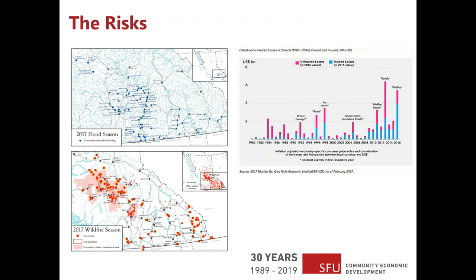Here in BC, just in the 2017 season between floods and wildfires, all of those dots on the map are communities that were impacted or areas that had some sort of fire. Clearly, there's a need in our province to be concerned about not only resilience in general, but especially economic resilience.